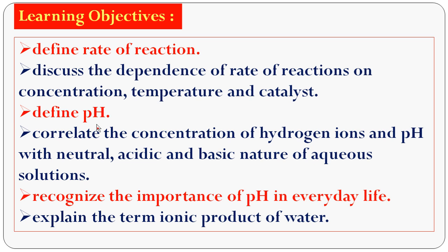To define pH. pH is the power of hydrogen ion concentration in a given solution. To correlate the concentration of hydrogen ions — H⁺ ions — with the neutral, acidic, and basic nature of aqueous solution. pH value decides whether the solution is acidic, basic, or neutral. To recognize the importance of pH in everyday life, such as pH in soil, pH in water, and pH in human blood. And also to explain the term ionic product of water.